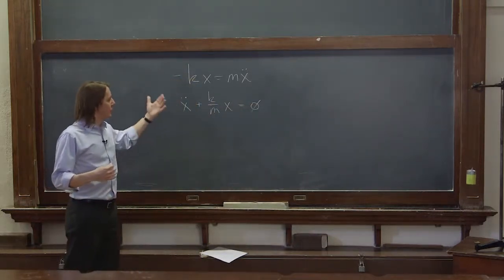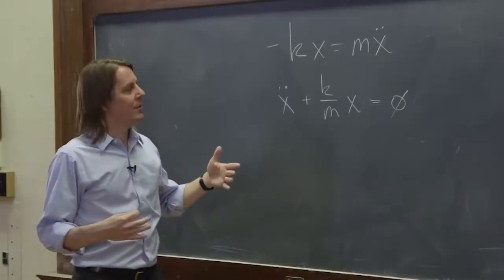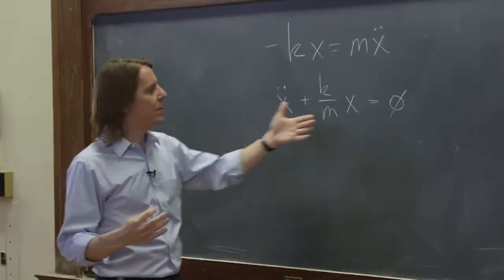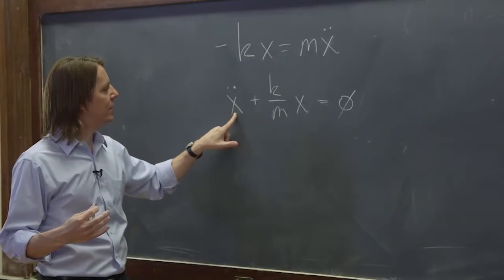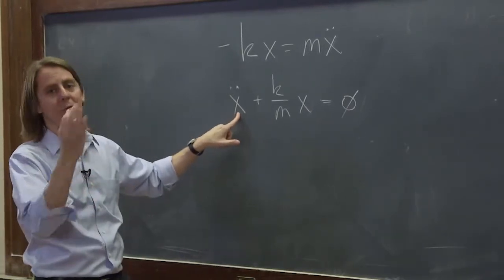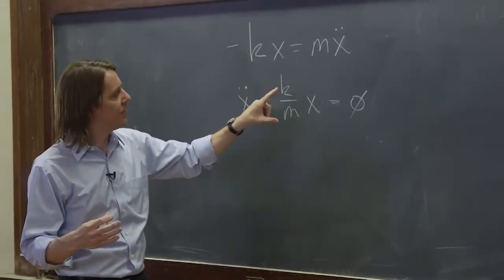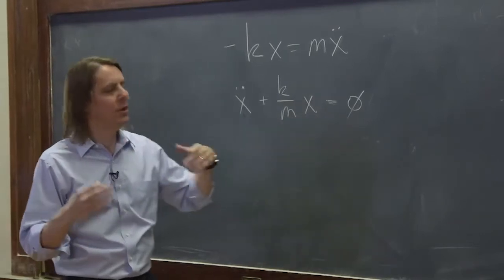So if you're ever reading a physics book or doing a physics problem, it might say show that it's an oscillator. This is all you got to do. If you can show that its second time derivative, or whatever derivative you want, plus a constant times the function itself equals zero, it's an oscillator.